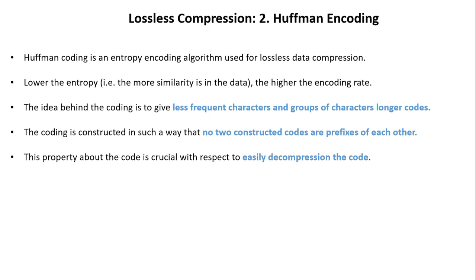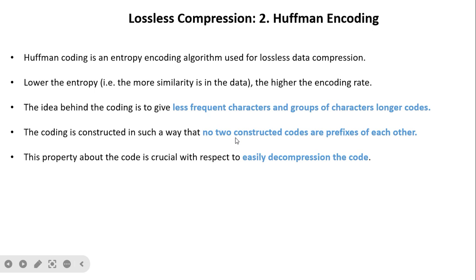Lower entropy means more similarity or less randomness, and the higher is the encoding efficiency. The idea behind Huffman coding is to use variable length codes: if a character occurs frequently, we assign fewer bits; if it occurs rarely, we assign more bits. The coding is constructed such that no two codes are a prefix of each other — this is crucial for easy decompression.